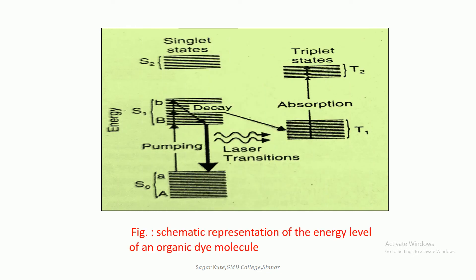The energy band diagram of a typical dye laser is shown in this figure. The organic dye molecule is known to have two sets of excited states: singlets denoted by S0, S1, and S2, and triplets denoted by T1 and T2. The transitions from singlet to triplet states are forbidden. Optical pumping excites the dye molecule from the lowest vibronic level of ground state S0 to one of the upper vibronic levels of excited state S1.